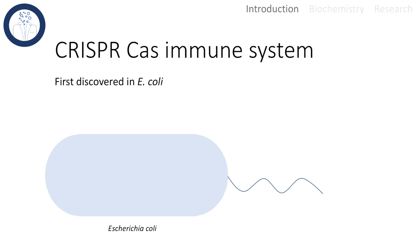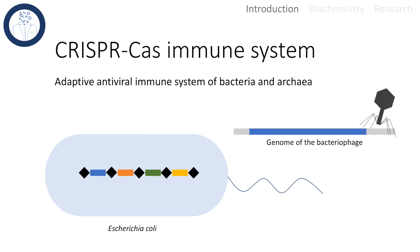I'd like to introduce the natural version of CRISPR-Cas. CRISPR-Cas originated from an immune system found in bacteria and archaea. It was first discovered in E. coli.